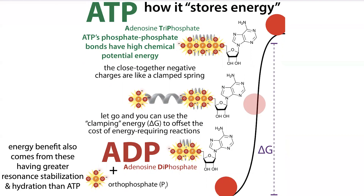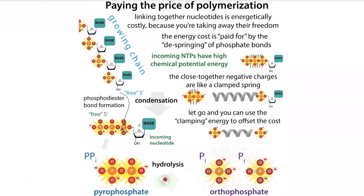Much more on why in another post, but basically you have these negatively charged groups clamped tightly together, and those negative charges are repelling one another — it's kind of like having to clamp together a tight spring. If you break those bonds and release a phosphate group or groups, you're getting that energy back, like releasing the spring and something flying off the end of it. But in this case, we can use that energy to do cool things, like link together DNA letters.